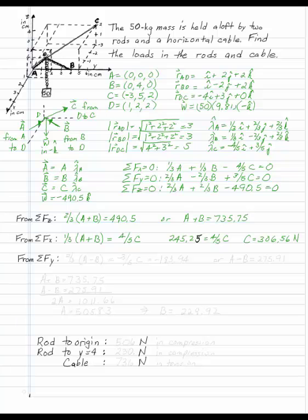Once I have c, I can go now to the sum of the forces in the y direction. I get 2 thirds a minus b is minus three fifths of c. Substitute that in, I get minus 183.94. Or, in this case, a minus b is 275.91.